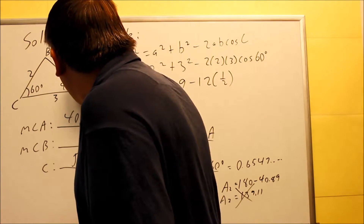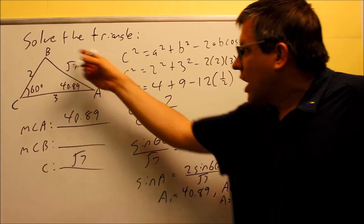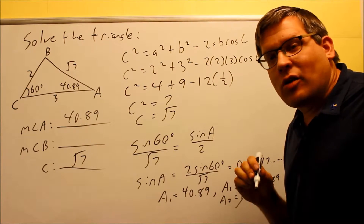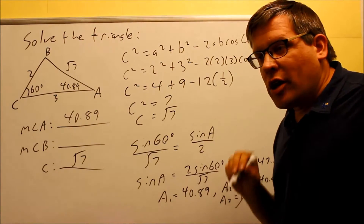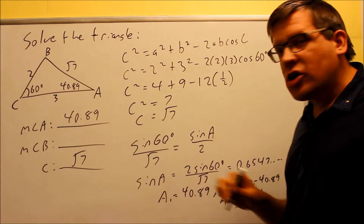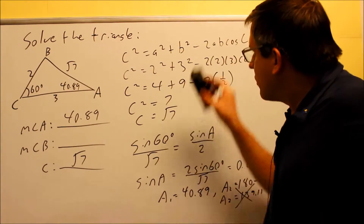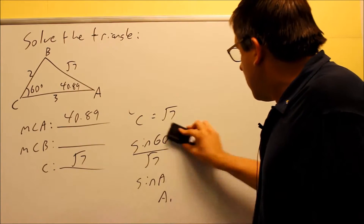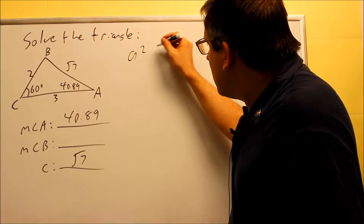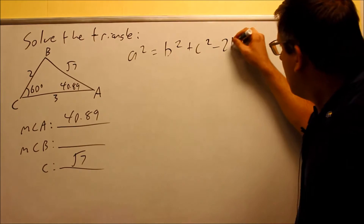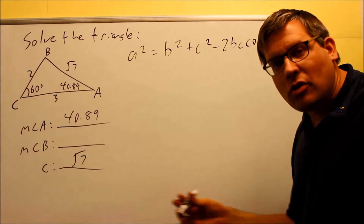We've confirmed angle A is 40.89 degrees using law of sines. But the question is: could we also find angle A using the law of cosines instead? The answer is yes. Let's redo that part of the problem using the law of cosines version that contains angle A. Using the form a squared equals b squared plus c squared minus 2bc cosine A is perfectly fine to do instead of using the law of sines.